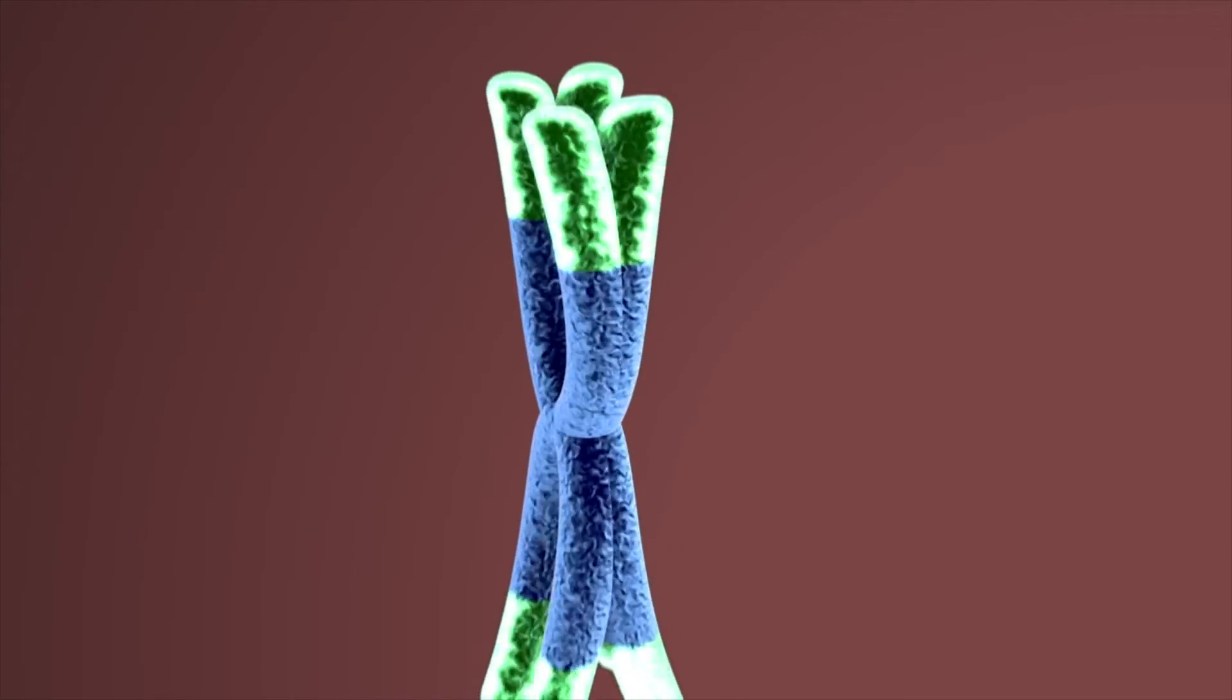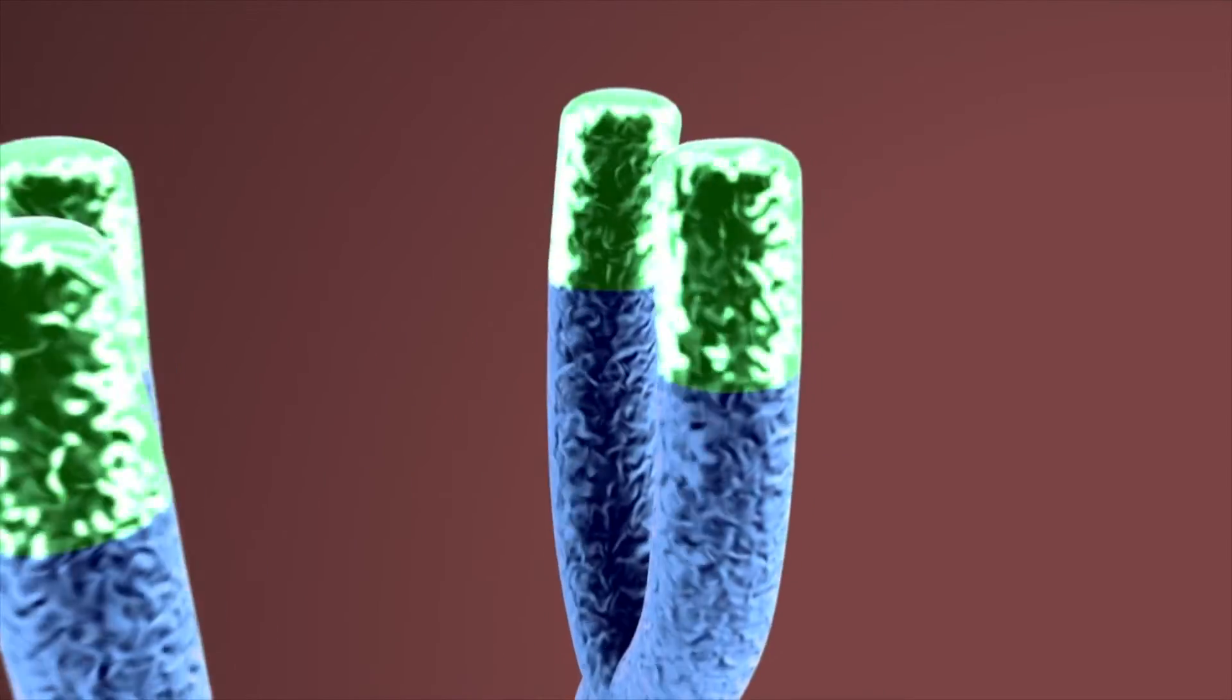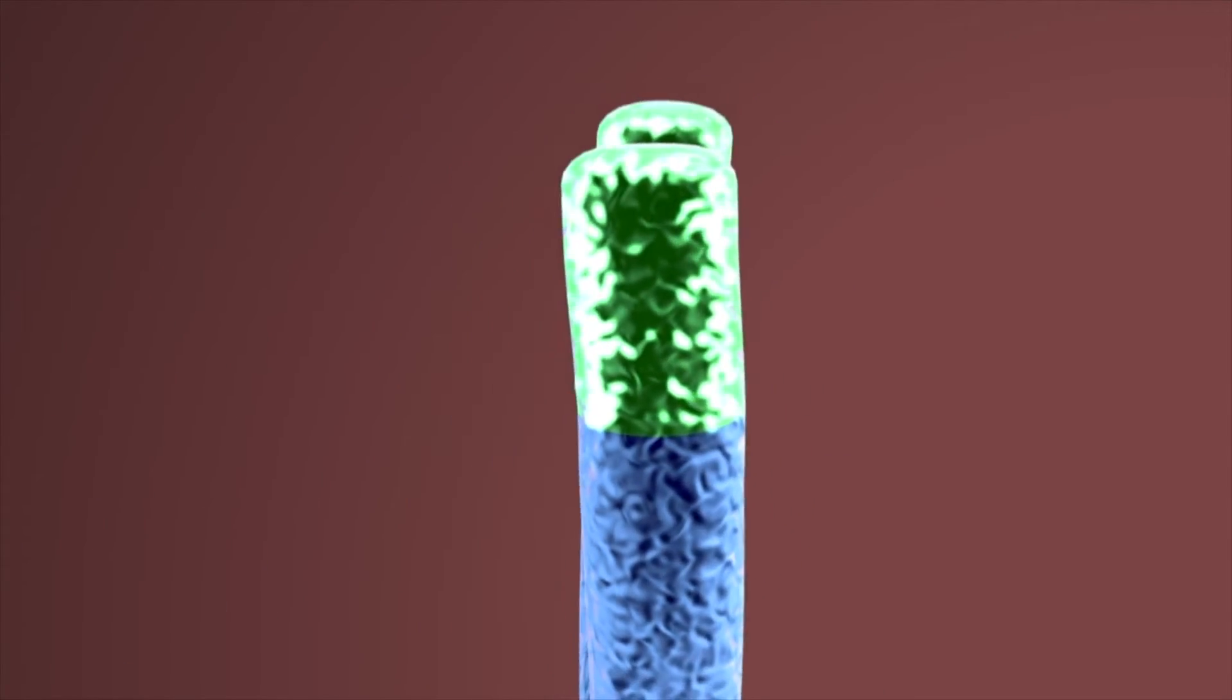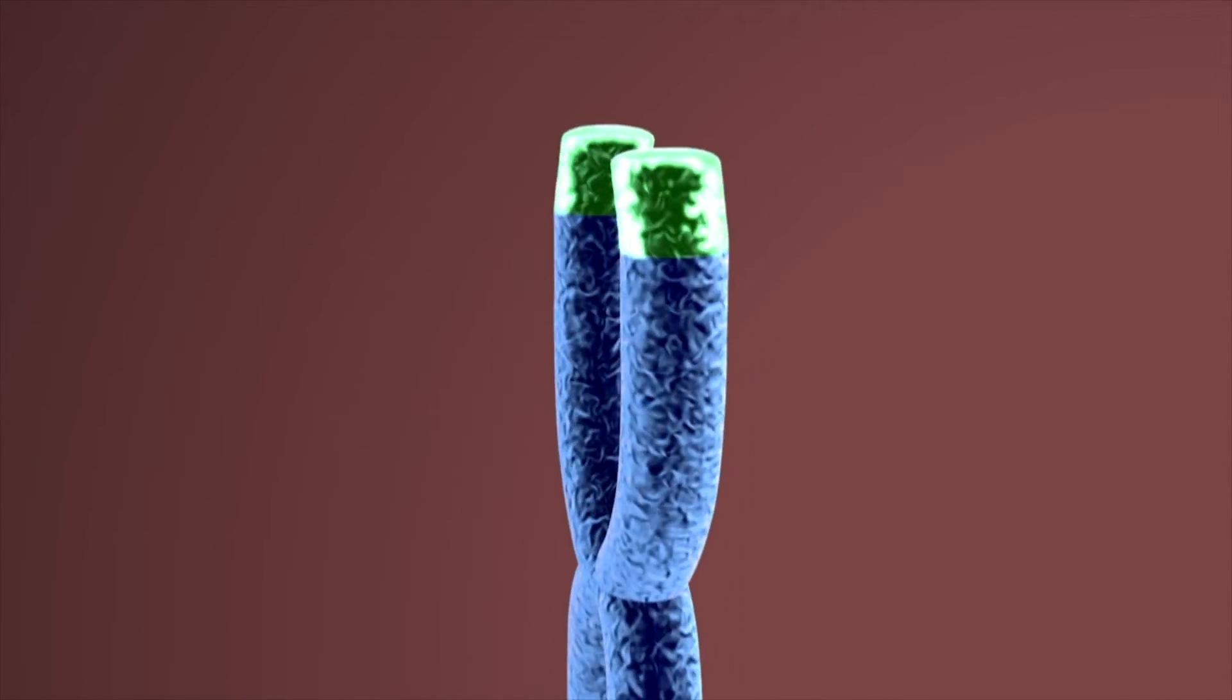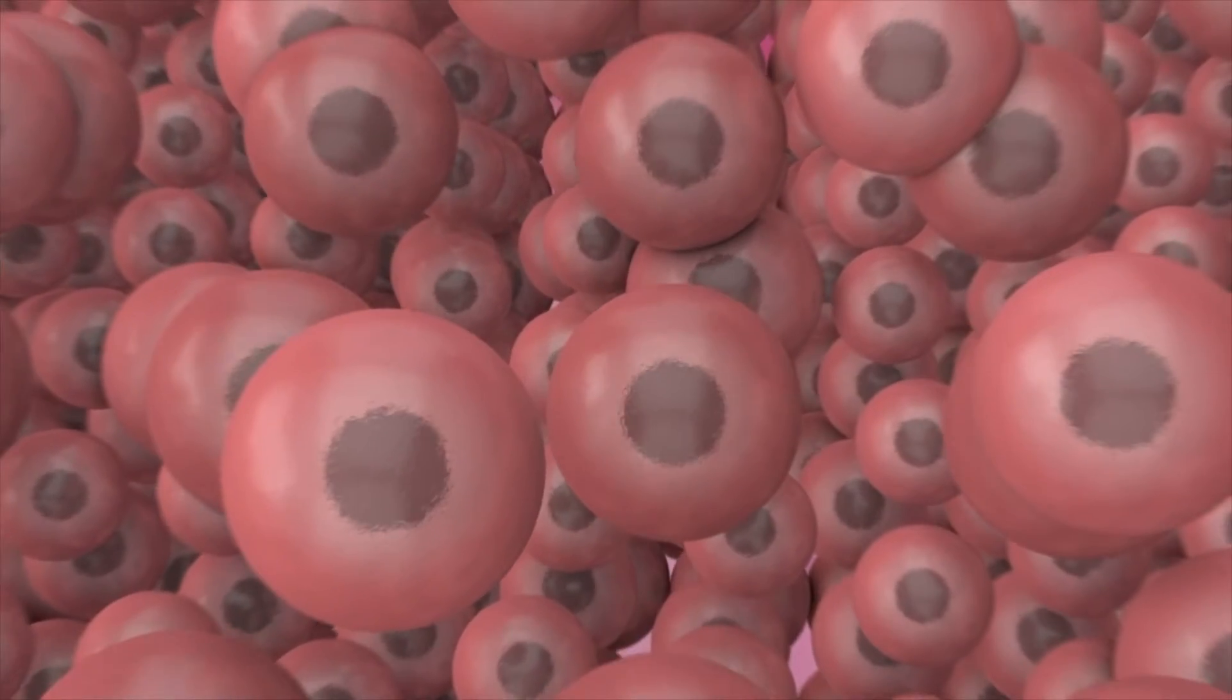With each cell division and replication process, the telomeres get shorter until the cells can't divide anymore, making it difficult for our body to naturally regenerate. When this happens, the tissue no longer divides, leading to cellular death.